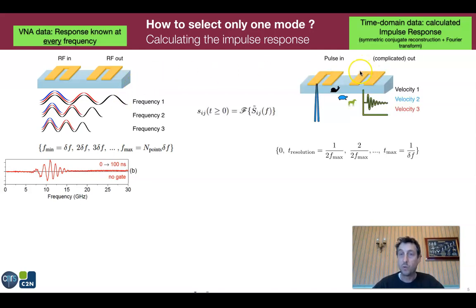We calculate what would be seen at the receiving antenna with an oscilloscope if we were to apply a strong Dirac excitation at the input antenna. We would see, effectively, the different spin wave wave packets arriving sequentially: first the fast, then the slower spin wave wave packets.